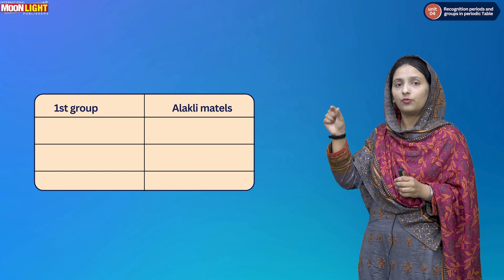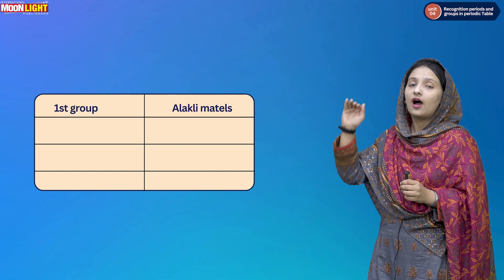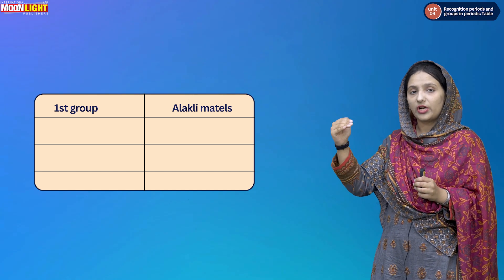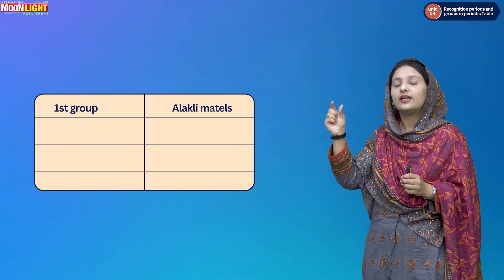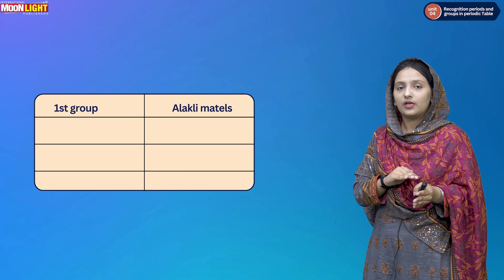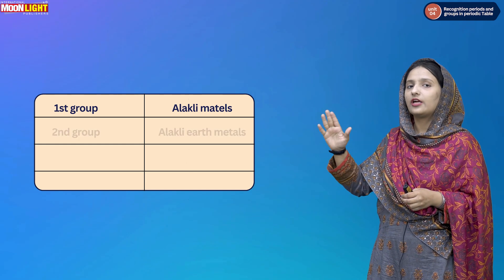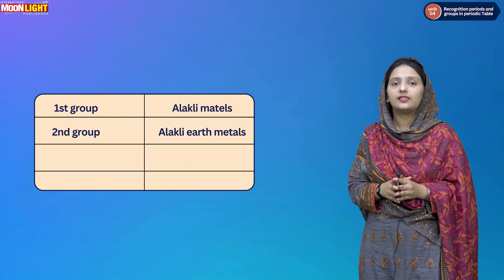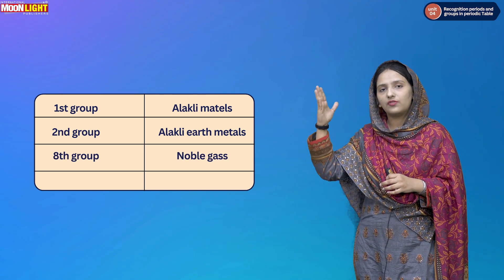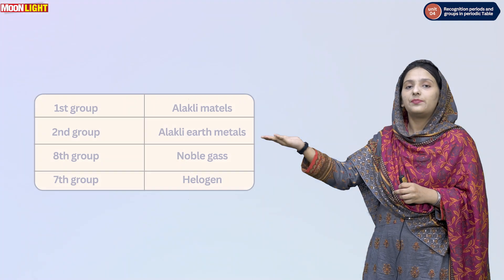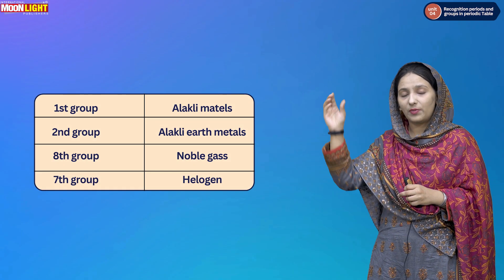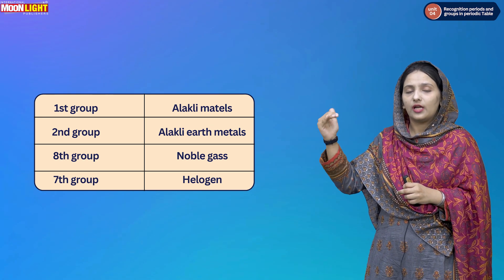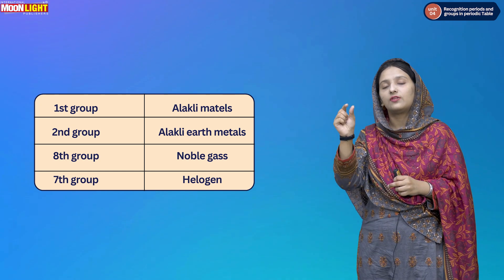For example, the first group is called alkali metals, which includes hydrogen, lithium, sodium, and potassium — these are all alkali metals from the earth. Another group contains alkaline earth metals. The last group contains noble gases, which includes elements like neon and argon, with chlorine being a different group of elements.